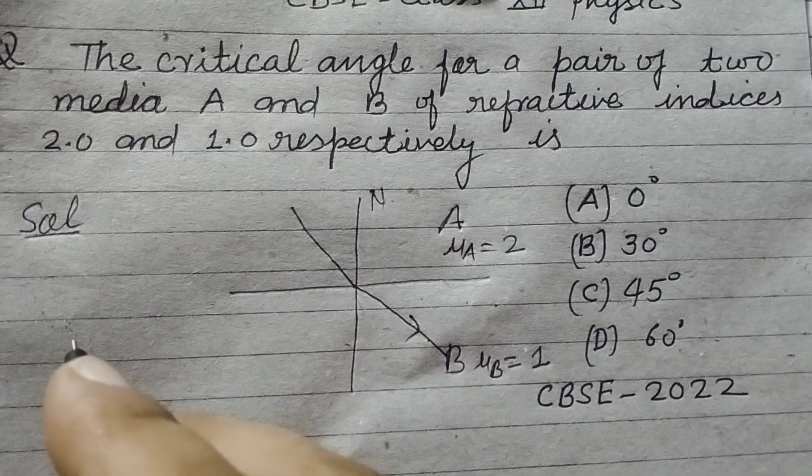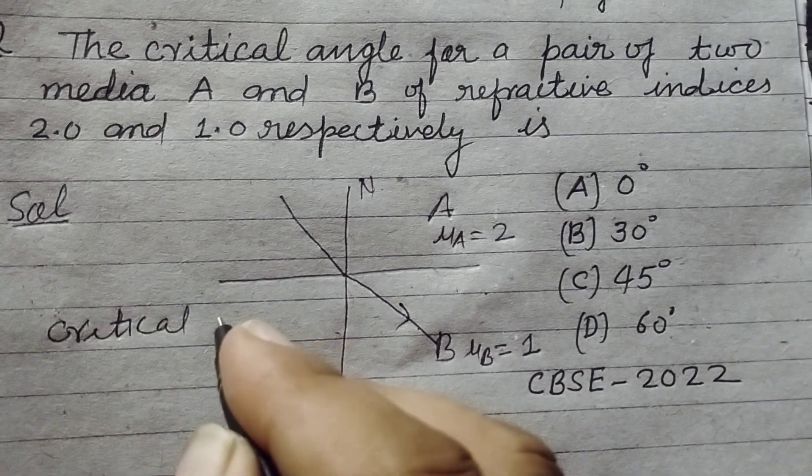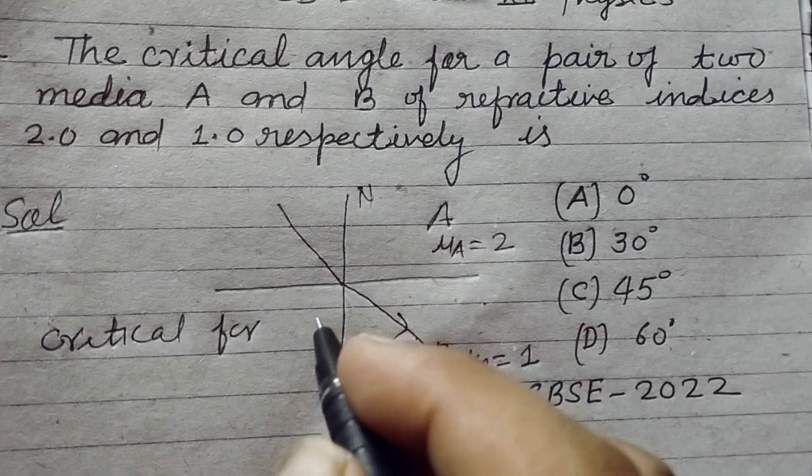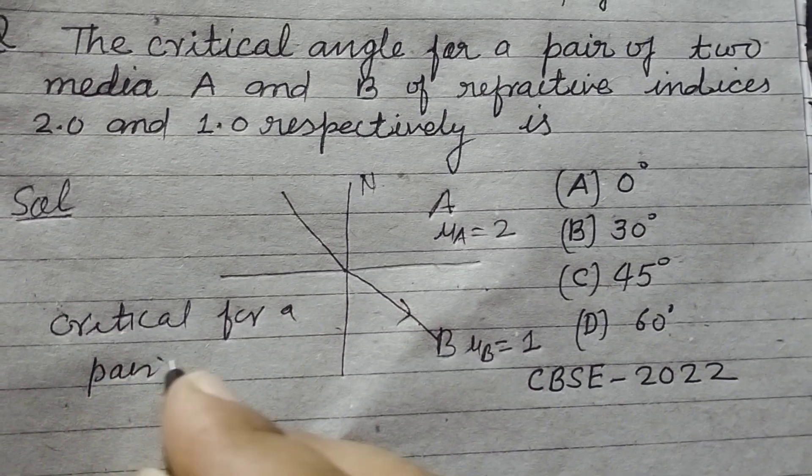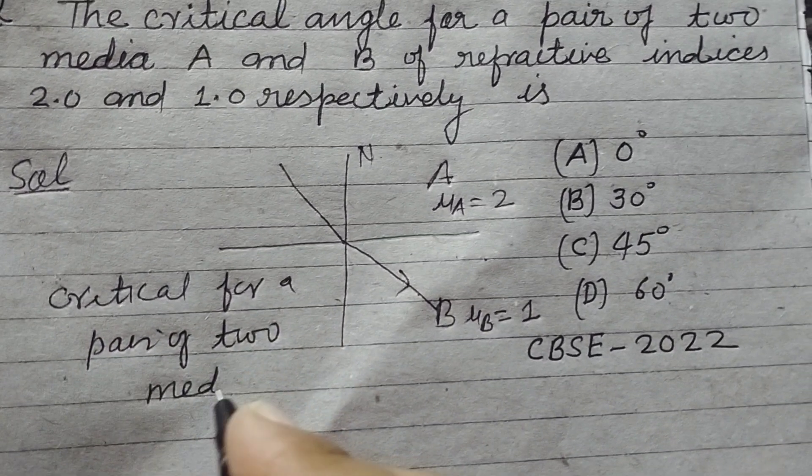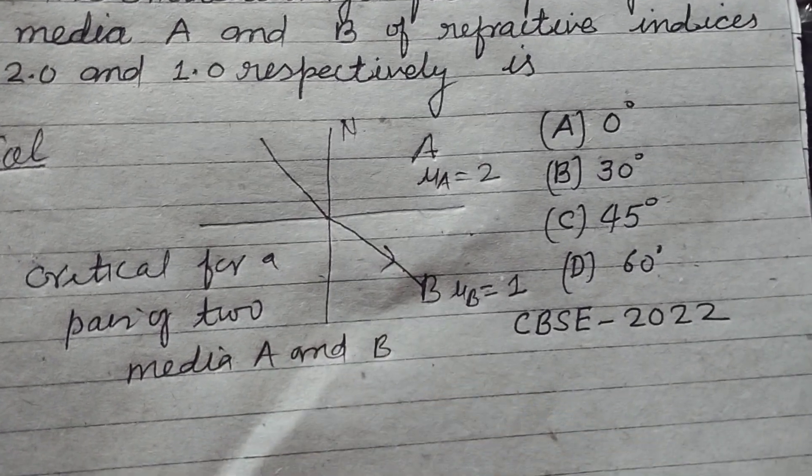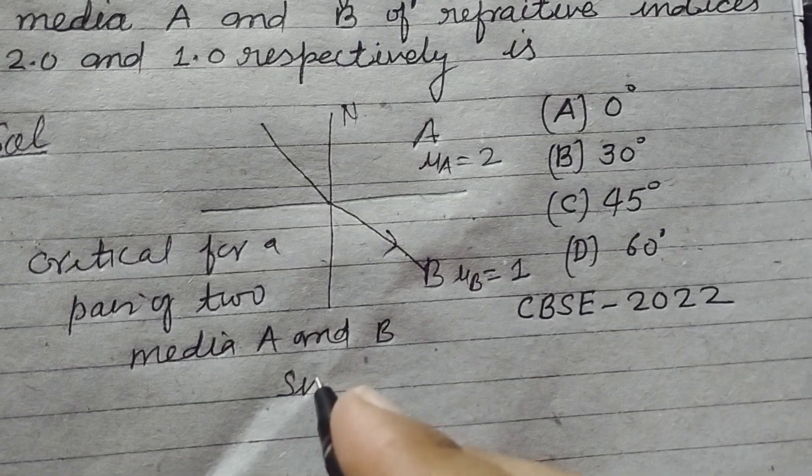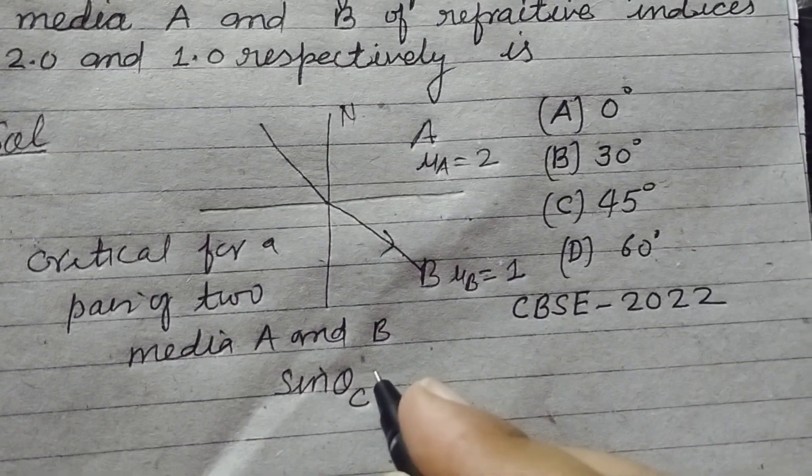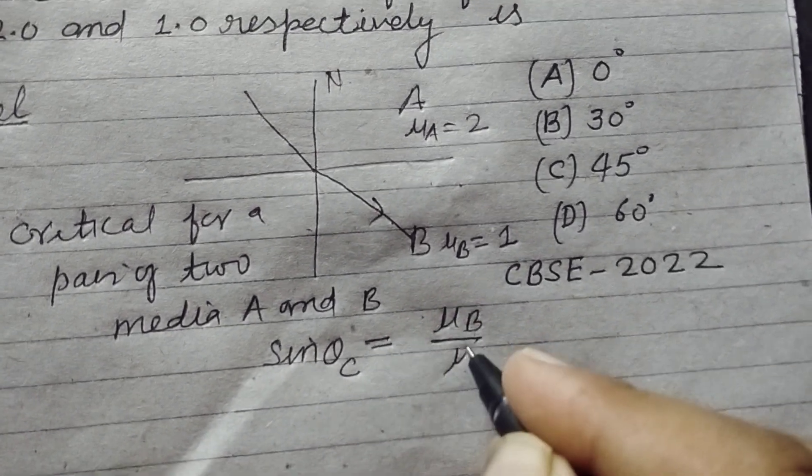We need to find the critical angle for a pair of two media A and B. So, sine of critical angle theta C equals mu B upon mu A.